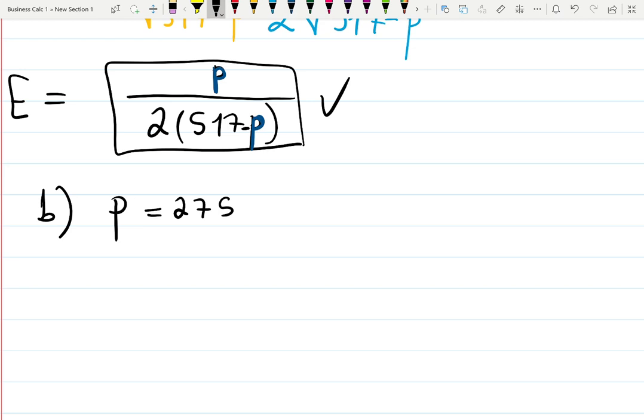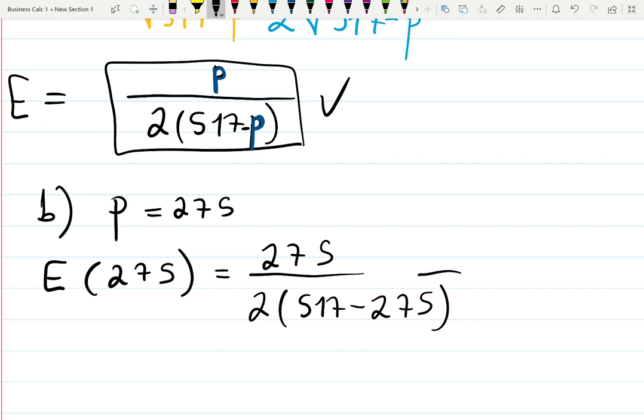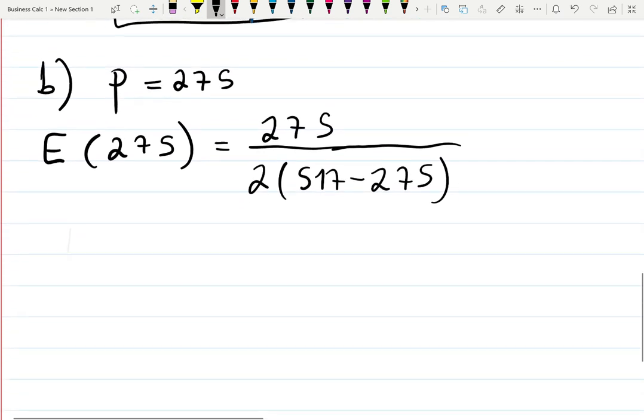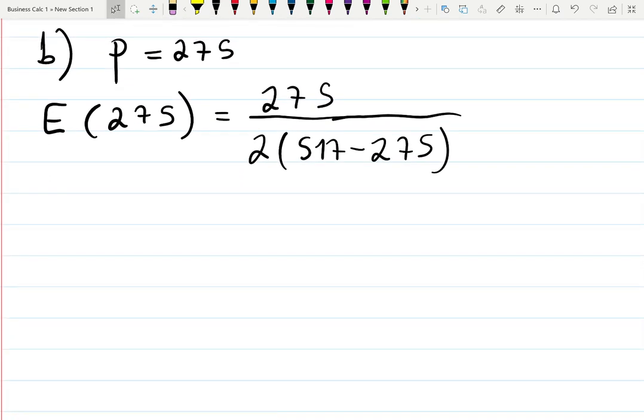Basically, copy and substitute this p everywhere I see p. E(275) = 275 over 2(517 - 275). That's basically some price we're practicing for the model, and we want to see what result we'll get for the elasticity function.